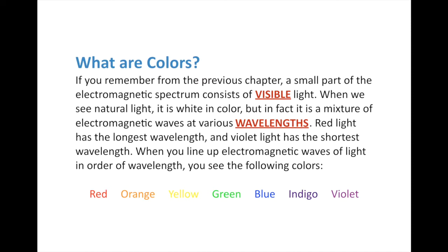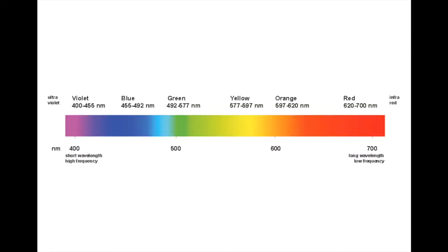Those colors in order of longest to shortest wavelength are red, orange, yellow, green, blue, indigo - which is a bluish purplish blue - and violet. Let's look at the layout of colors on the electromagnetic spectrum going in the opposite direction, from violet back to red, from shortest to longest.